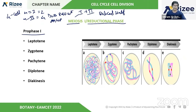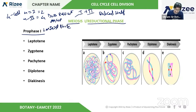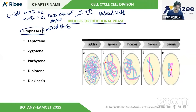What is the longest phase? Prophase 1 is the longest phase in meiosis. Compared to interphase in mitosis, prophase 1 in meiosis is the longest phase.